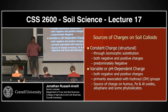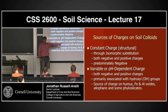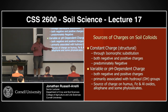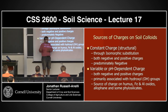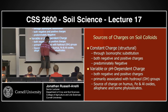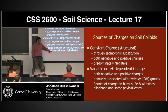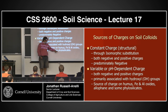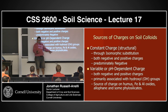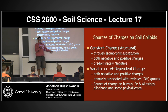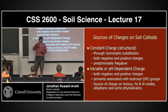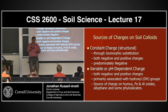We also have a variable, or pH-dependent, charge. This is both negative and positive, primarily associated with those hydroxyl groups, and it changes based on pH. It's a big source of charge when you're looking at molecules with lots of exposed hydroxyls — humic material, iron oxides, iron aluminum oxides, allophanes, and some of these phyllosilicates. That word 'some' is important: some phyllosilicates don't have many hydroxyls sticking out and won't be very susceptible to pH change, while others do and are more susceptible.